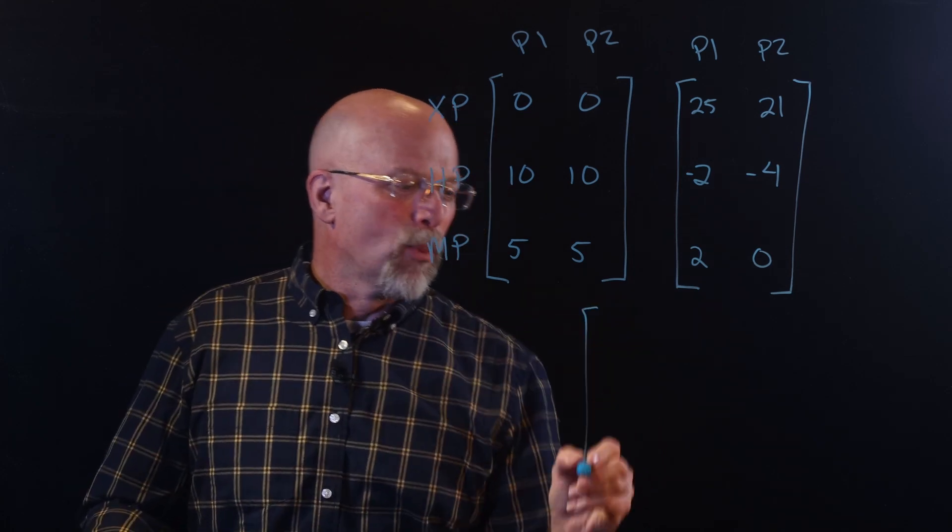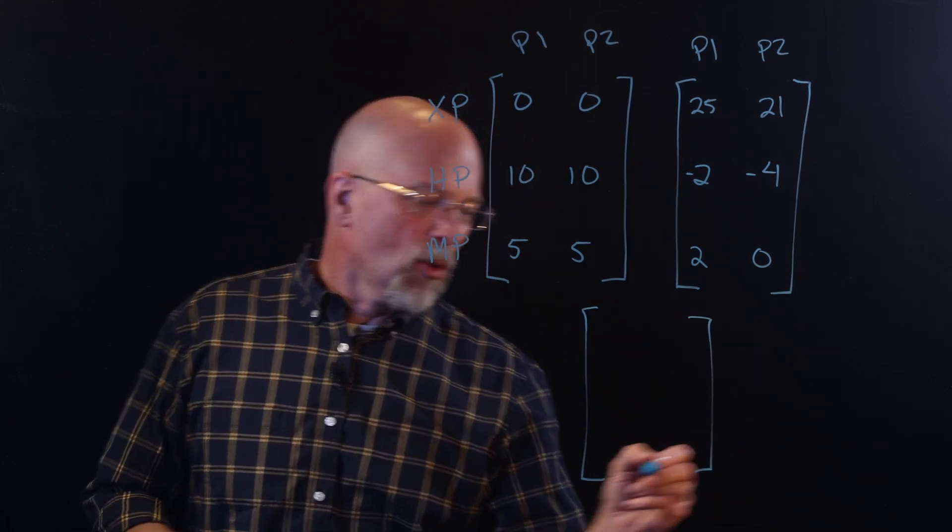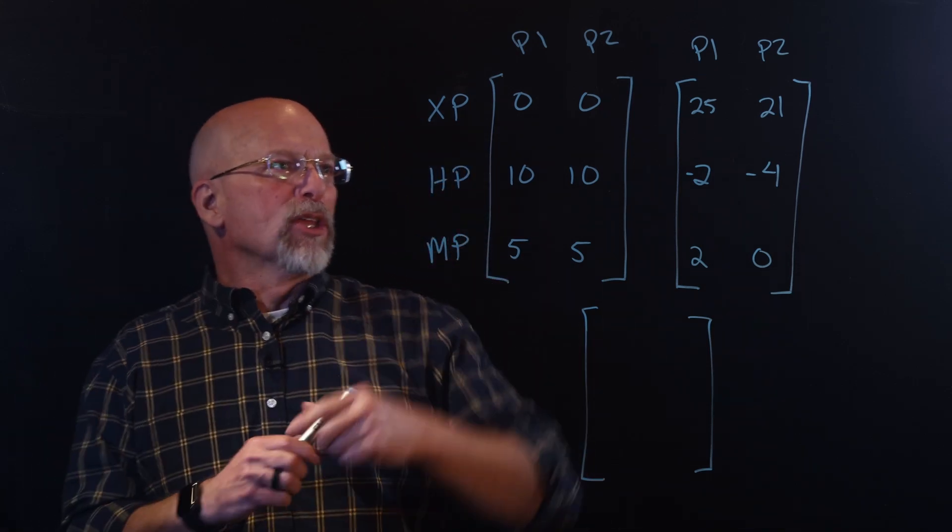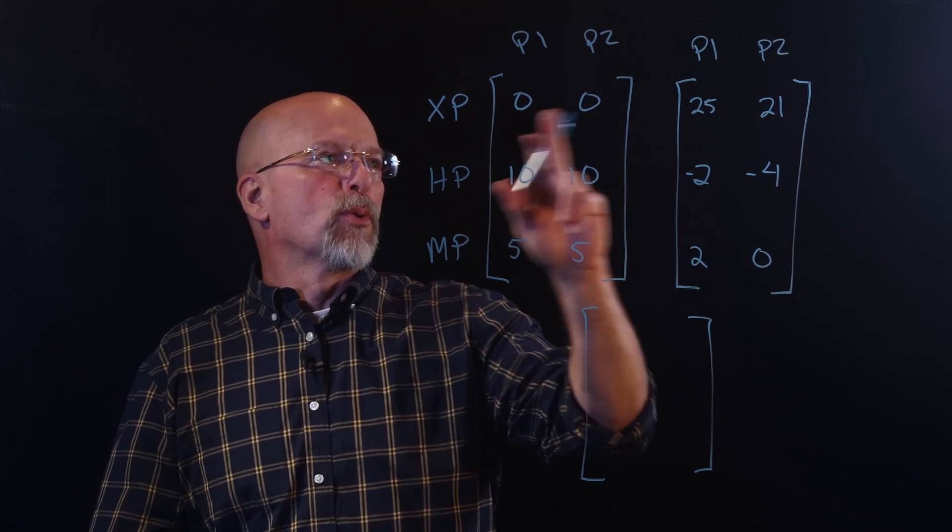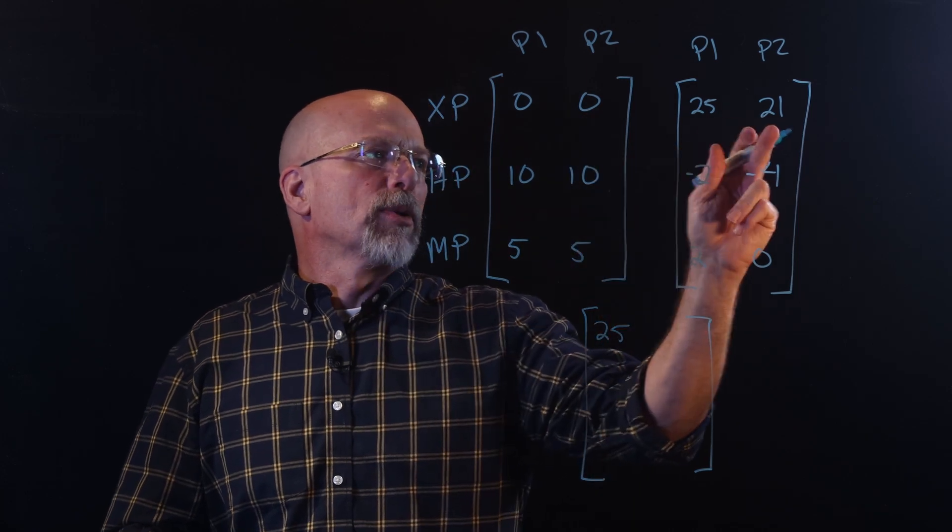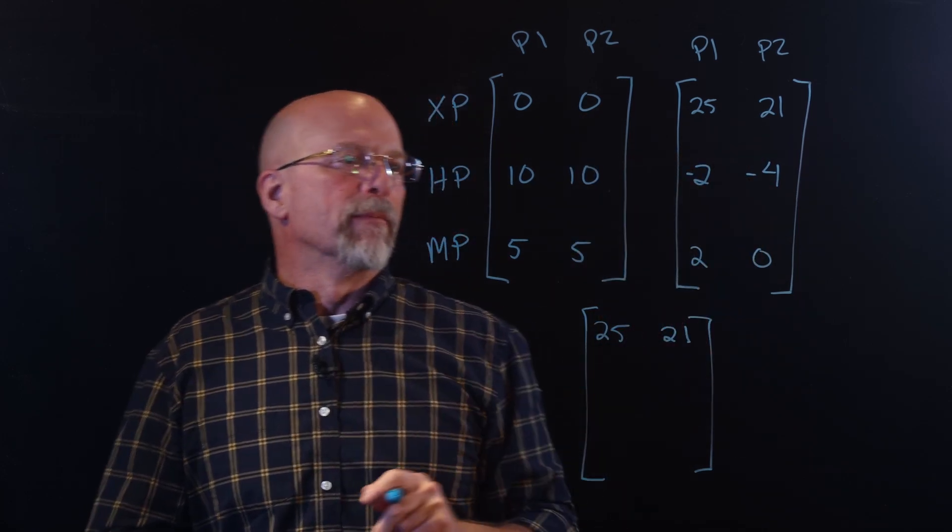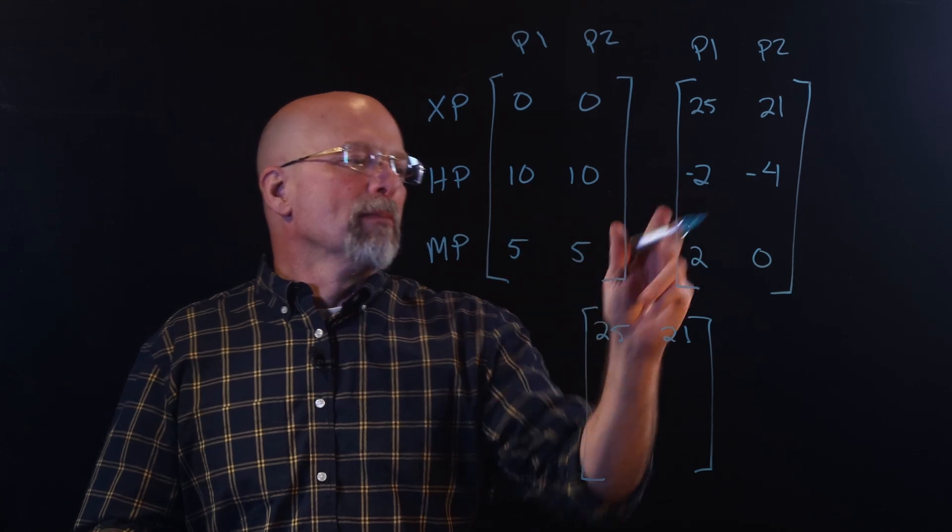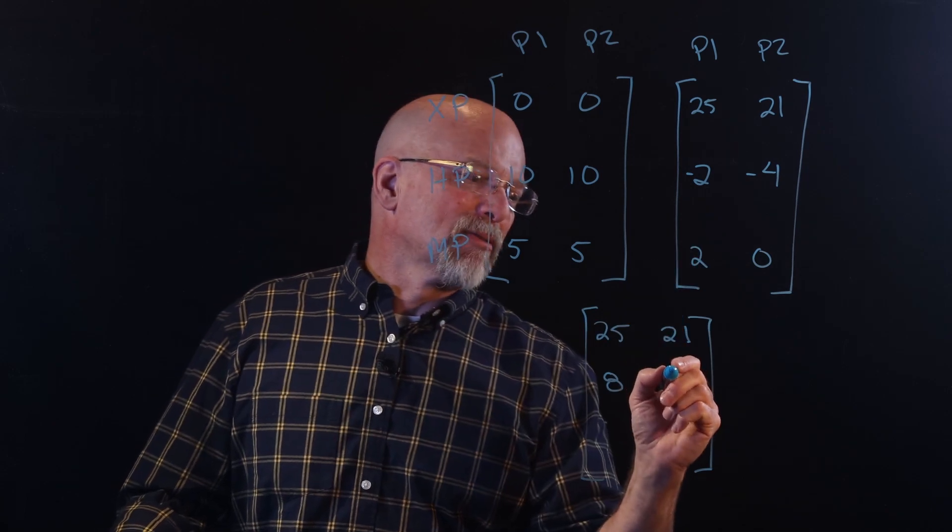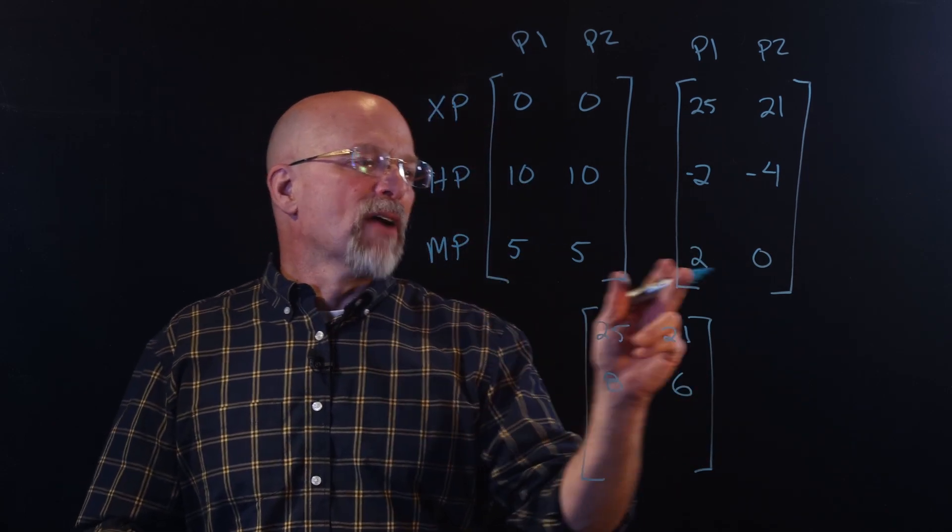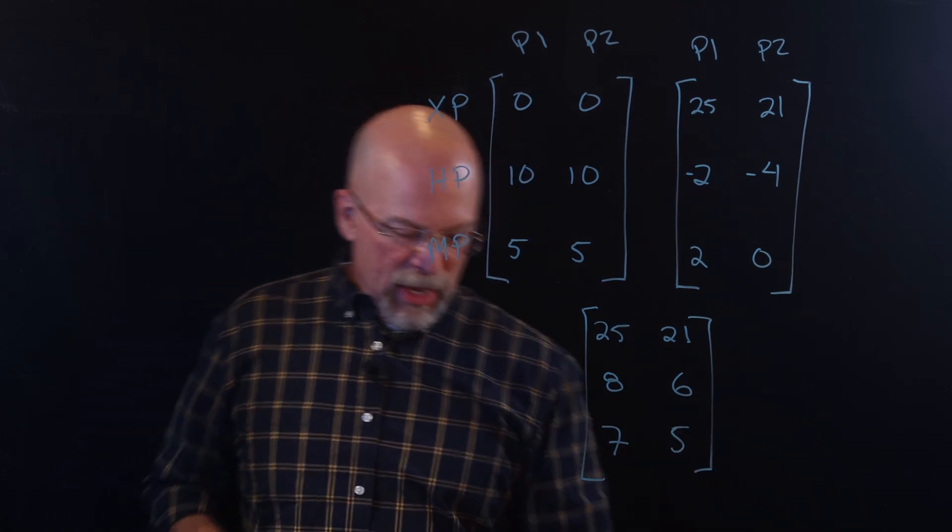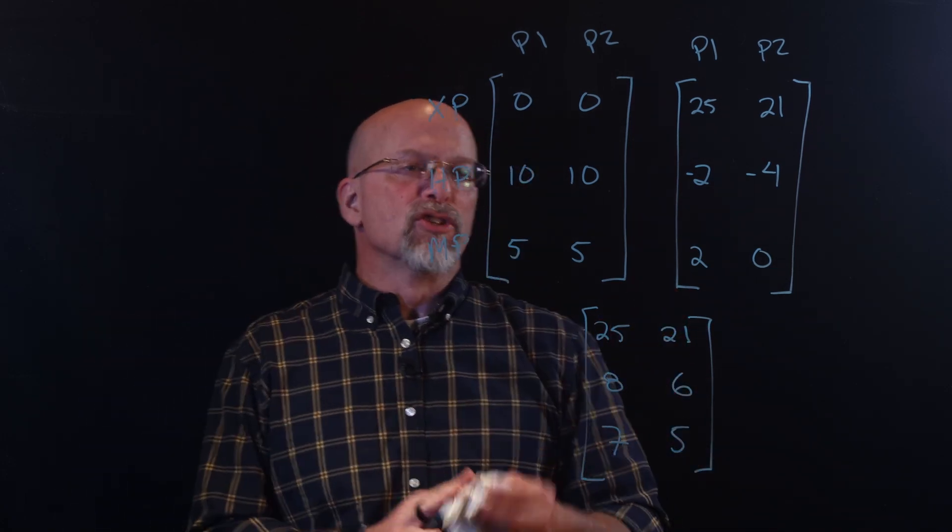Now, how would you come up with what their overall rating is, or their overall point total is? What you would do is you would take their first value for experience points, add what they gain. So 0 plus 25 is 25. 0 plus 21 is 21. And then the health points. We've got 10 minus 2, that's 8, or 10 plus negative 2. 10 plus negative 4 is 6. 5 plus 2 is 7. 5 plus 0 is 5. And so after one round, we've got this new total.